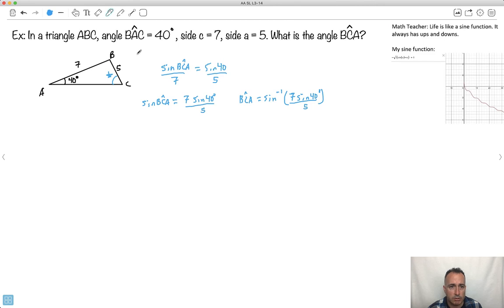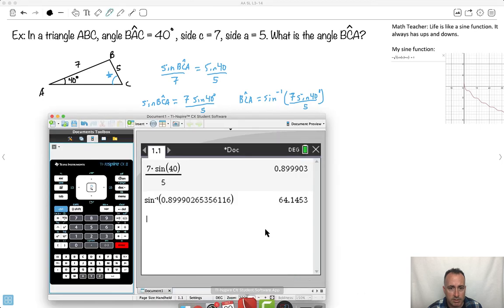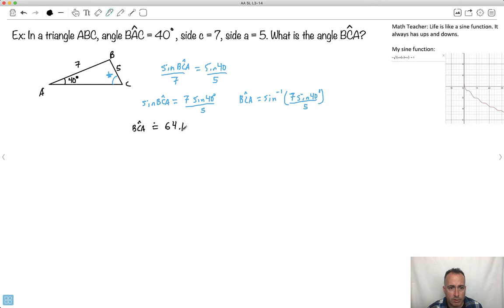I'll state my conclusion. So angle BCA is approximately equal to 64.1 degrees. There we go, that's my answer, and I'm done, right? No, no, no. That's the whole point of the ambiguous case. There's something else possible.